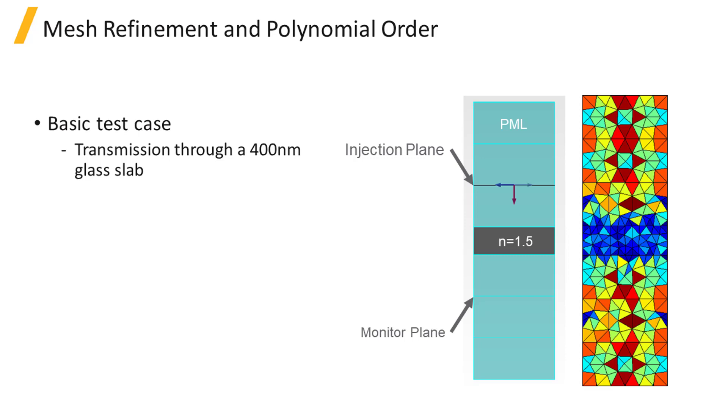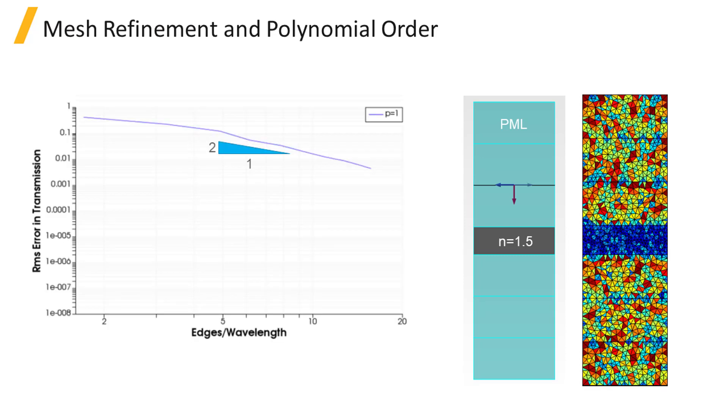We calculate the transmission through a 400 nm thick glass slab for different mesh sizes and different polynomial orders. We then plot the RMS error of the transmission calculation as a function of the number of edges per wavelength and for different polynomial orders 1, 2 and 3.